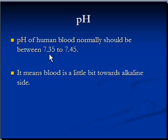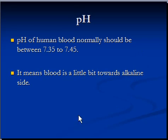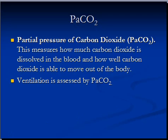The pH of human blood should normally be between 7.35 and 7.45, meaning the blood is slightly on the alkaline side since pH is greater than 7.